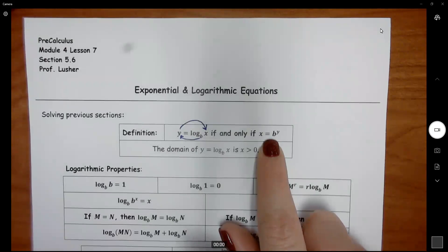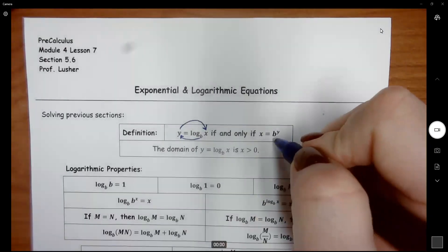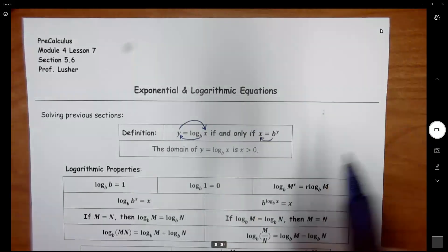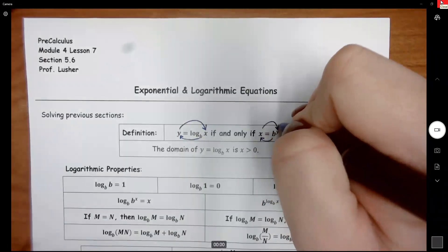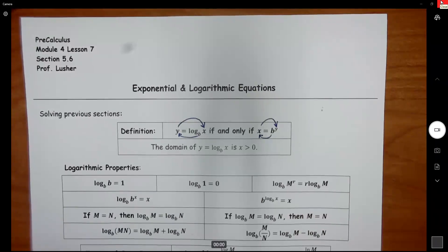Works opposite going the other way. We'll go base to equals, so log base b of x, and it equals whatever your exponent is. So we can move back and forth between those two.